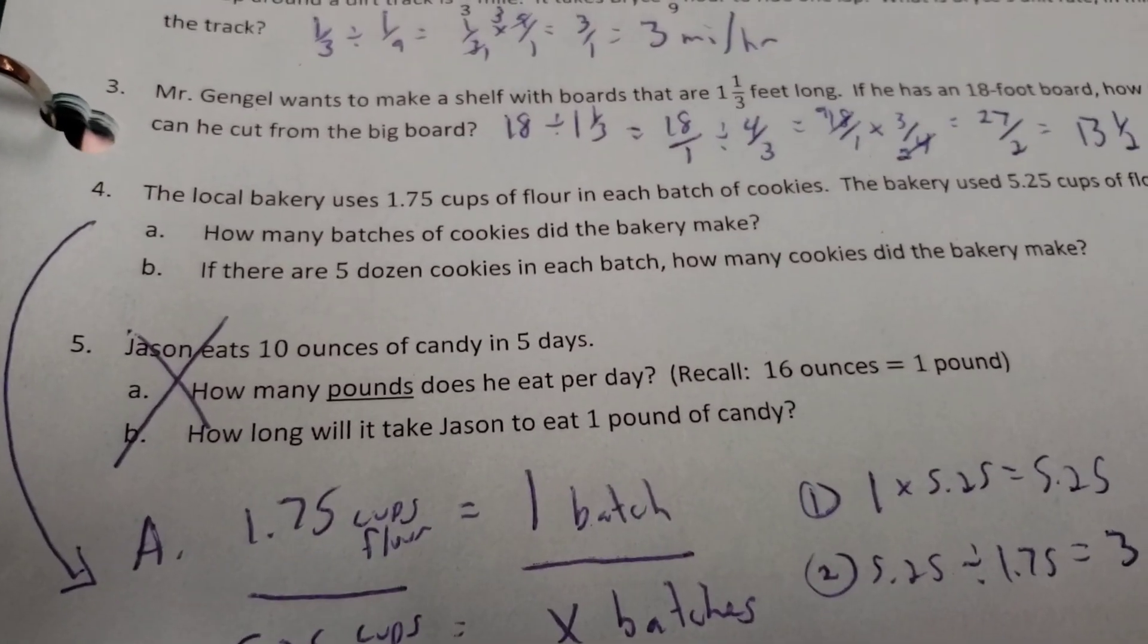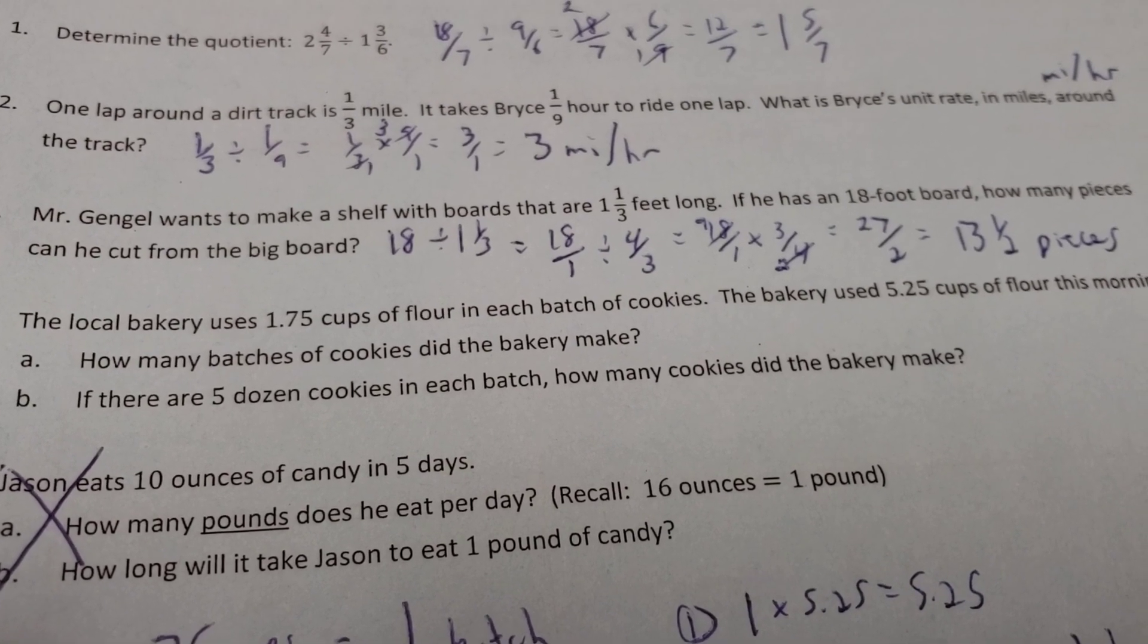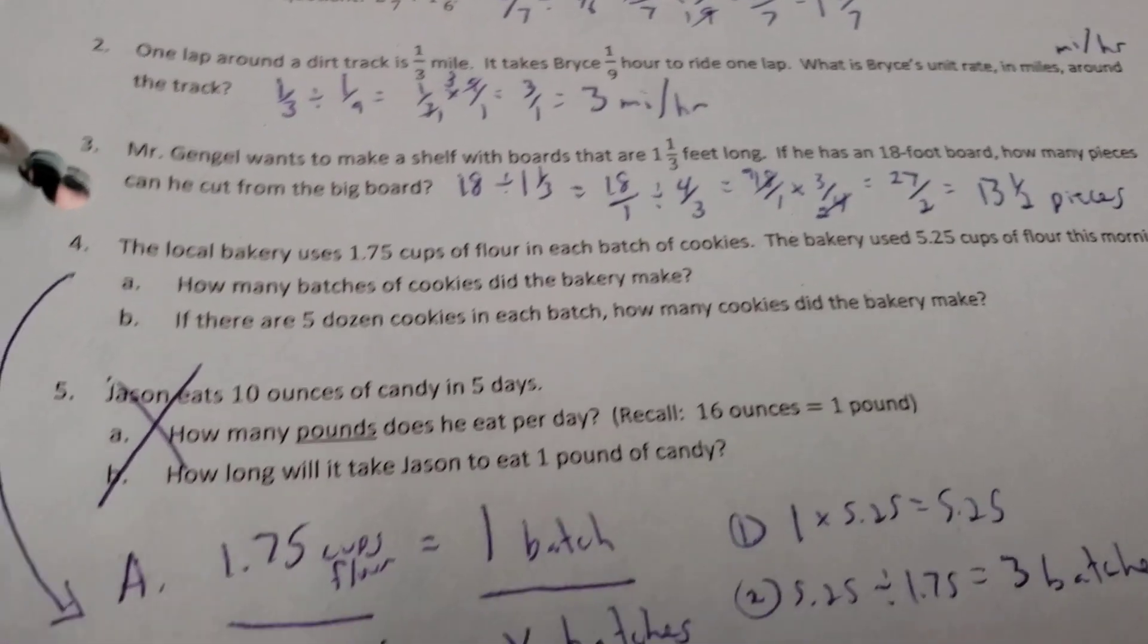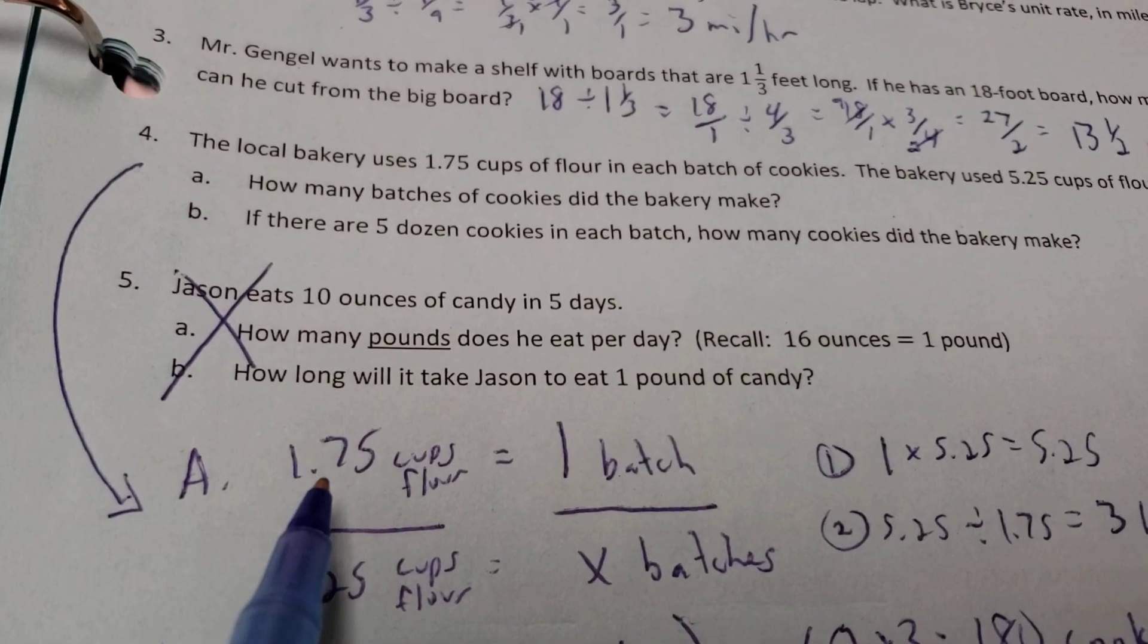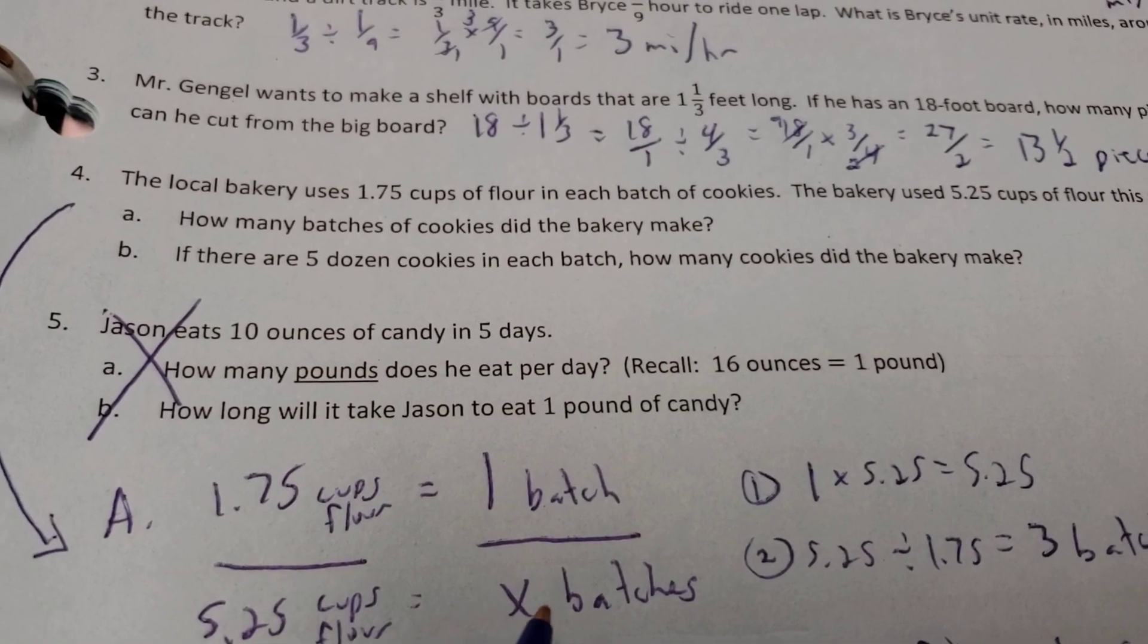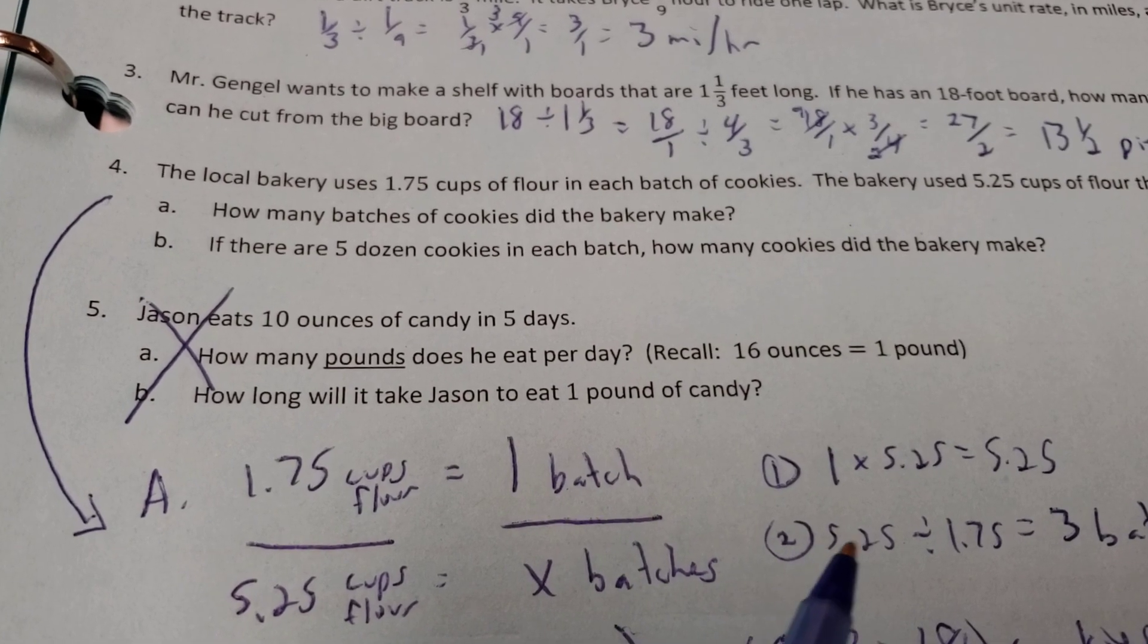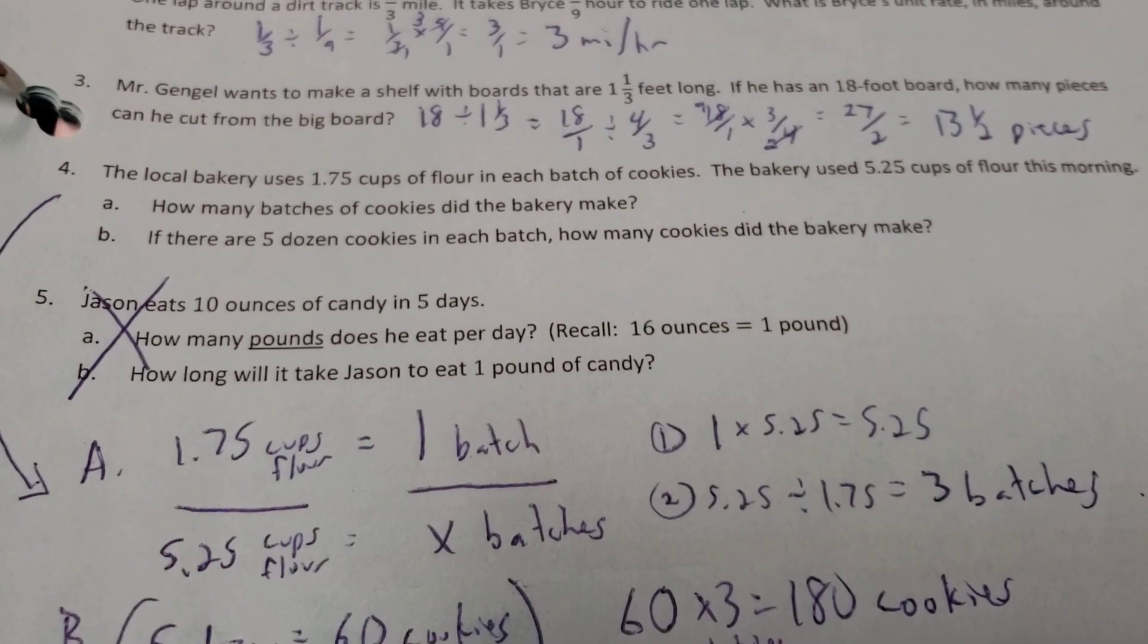All right. We're now going to do number 5. We're going to look at number 4. This is the local bakery uses 1.75 cups of flour in each batch of cookies. The bakery used 5.25 cups of flour in the morning. So, how many batches did they make for A? Well, so we'll set up a proportional relationship problem. We know 1.75 cups of flour will make one batch of cookies. But they actually used 5.25 cups, so how many batches will that make? Well, I cross-multiply what I can. I get 5.25 times 1, and then take that answer for step 2, and divide it by the leftover number. So, 5.25 divided by 1.75, that gives us 3 batches.